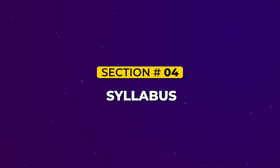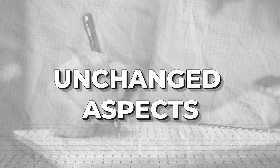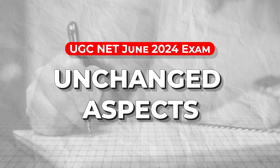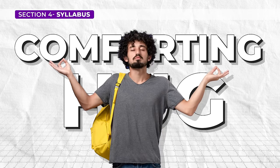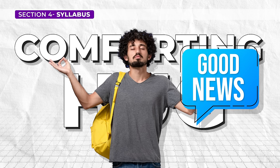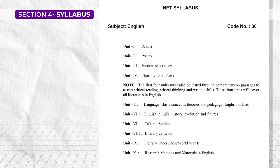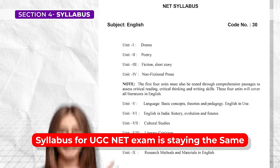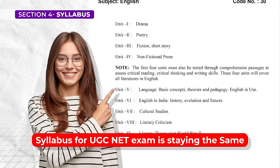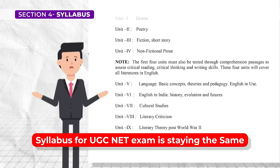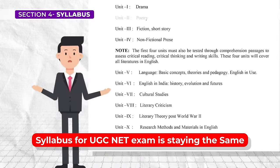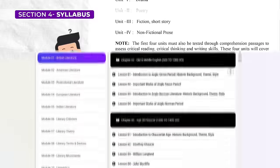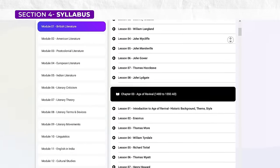Section 5: Syllabus. Now that we have gone through the offline mode discussion, let us talk about the unchanged aspects of the UGC NET June 2024 examination — this section will feel like a comforting hug. First things first: the syllabus for the UGC NET exam is staying the same. This means no stressing over learning new topics or fretting about changes in the curriculum. If you wish to understand the syllabus in detail, head over to our website which is a great source of this information.